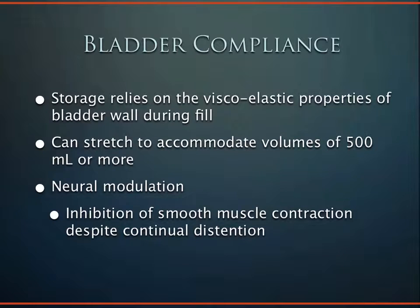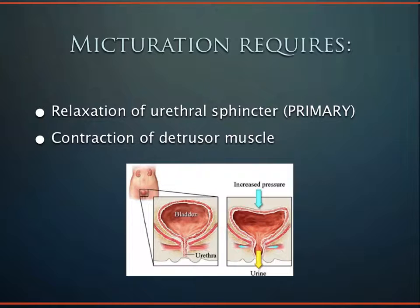The bladder's compliance is amazing—it relies on the viscoelastic properties of the bladder while filling up. It can expand to 500, 600, 700 cc's. My record in my emergency department is a patient with 1,400 cc's of urine in their bladder. The term micturation means to urinate or void your bladder—it occurs through urethral relaxation and secondarily contraction of the detrusor muscle. After a patient voids, there should be little or no urine left; the amount remaining is termed the post-void residual, or PVR.